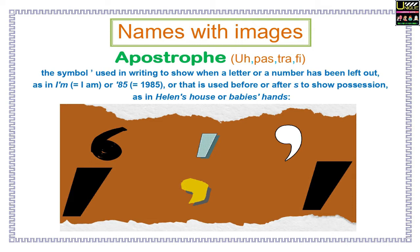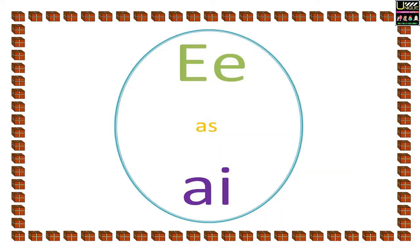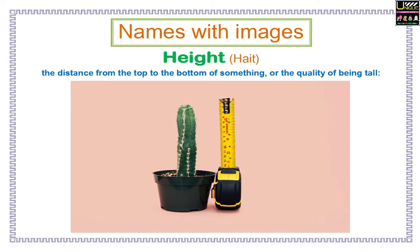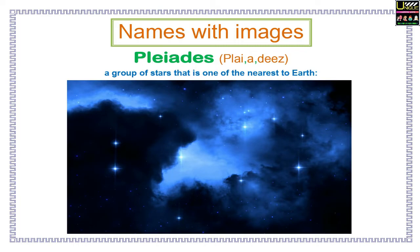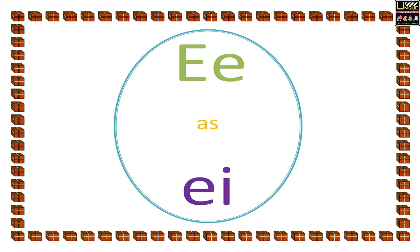Or that is used before or after S to show possession, as in Helen's house or baby's hands. E as in Names with images. Height: the distance from the top to the bottom of something, or the quality of being tall. Pleiades: a group of stars that is one of the nearest to earth.